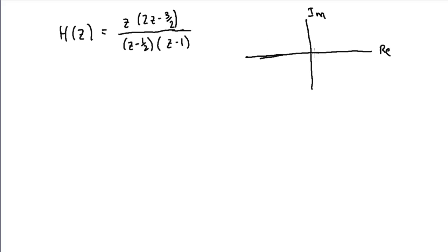And so one zero location is at z equal to zero, and the other zero location, I set this term equal to zero, I get 2z is equal to 3 halves, or z is equal to plus 3 quarters, so if I call that 1 plus 3 quarters, it's going to be about right there.